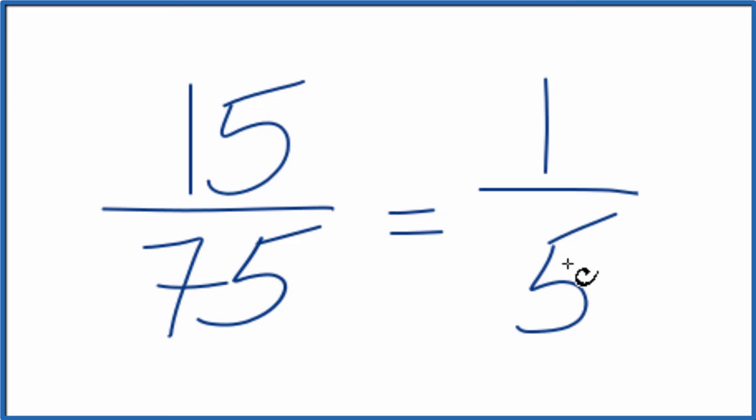There's another way we could do this if you didn't know that 15 divided evenly into 75. You could divide 15 by 5 and 75 by 5. So 15 divided by 5 is 3, and 75 divided by 5 is 15.